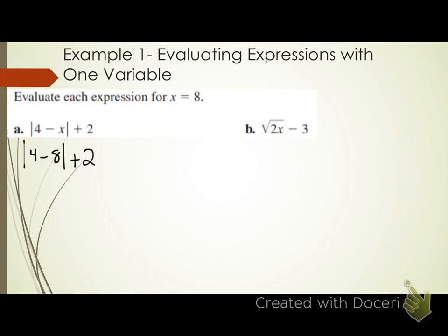Can someone tell me what the order of operations are? GIMDOS — I like to make the P a G and call it grouping symbols. Y'all are used to it being parentheses, but there's more than just parentheses that are grouping symbols, so I call it GIMDOS. The G is grouping symbols — that would be parentheses, brackets, and absolute value in our case here.